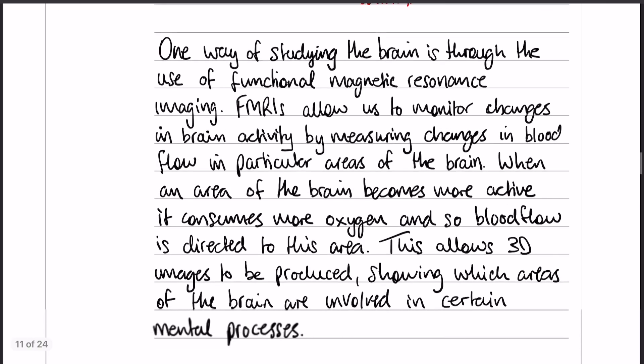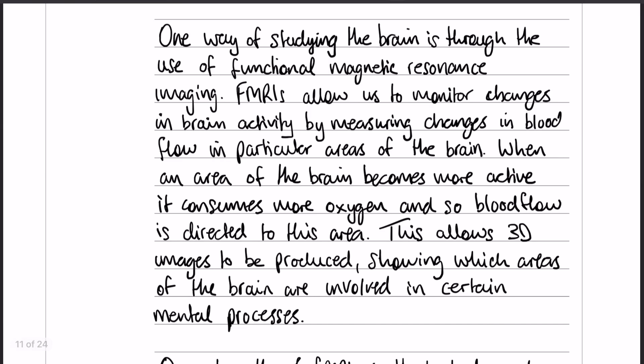So here is the outline. One way of studying the brain is the use of functional magnetic resonance imaging, which is fMRIs. fMRIs are all about monitoring changes in brain activity by measuring changes in blood flow. When areas of the brain get more active, they need more oxygen, and that allows us to produce a 3D image showing which areas of the brain are involved in certain mental processes.